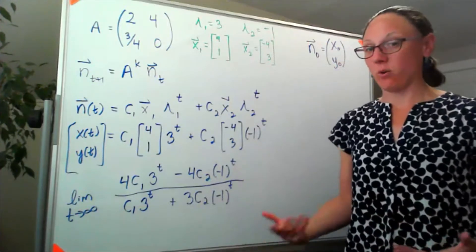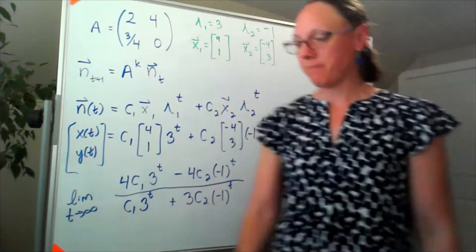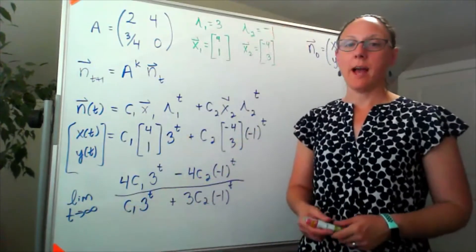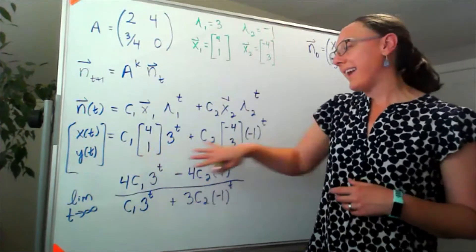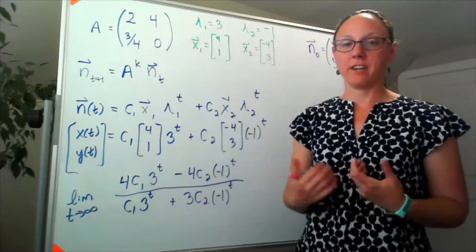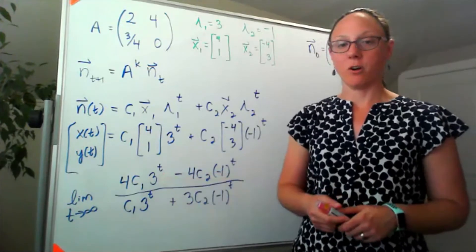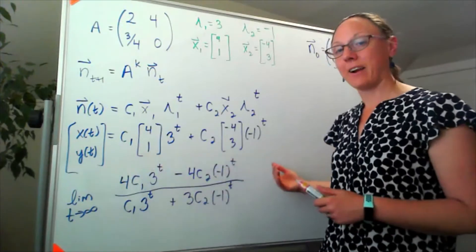Good news is we have at least one technique to get us out of garbage over garbage, and that's going to be: since we are taking the limit as t approaches infinity, I'm going to look for what in here is headed to infinity the fastest, and that's going to be that 3 to the t term.